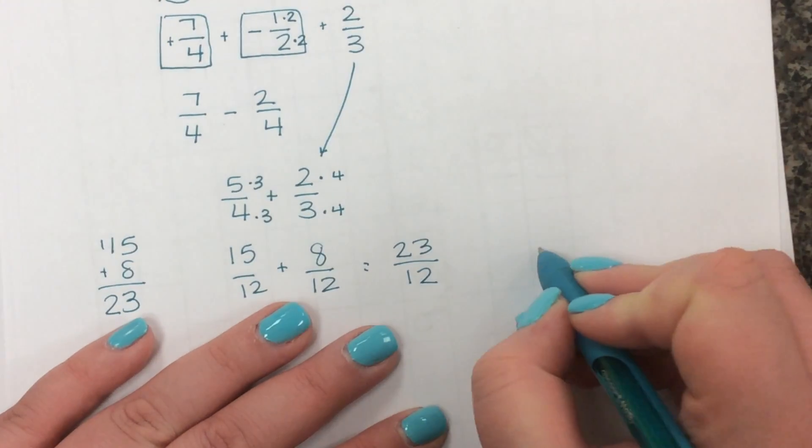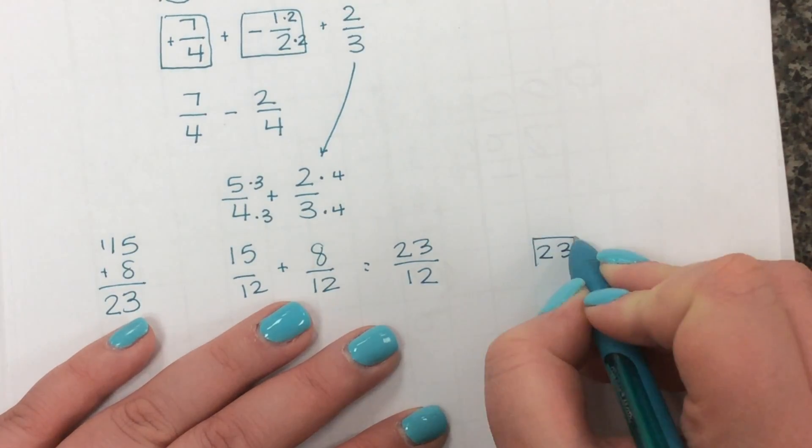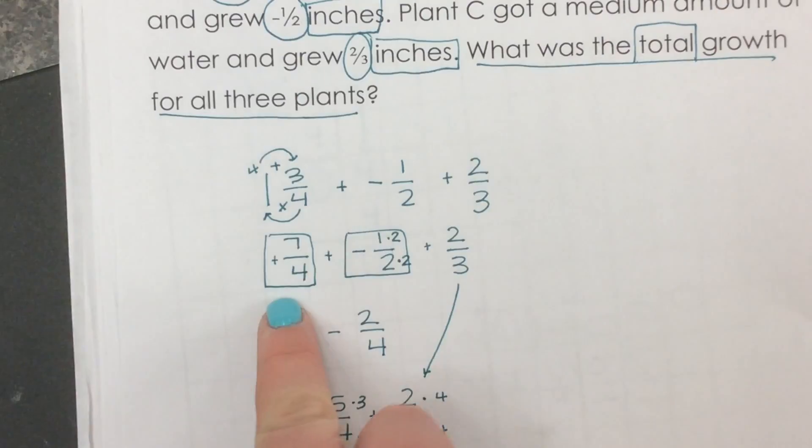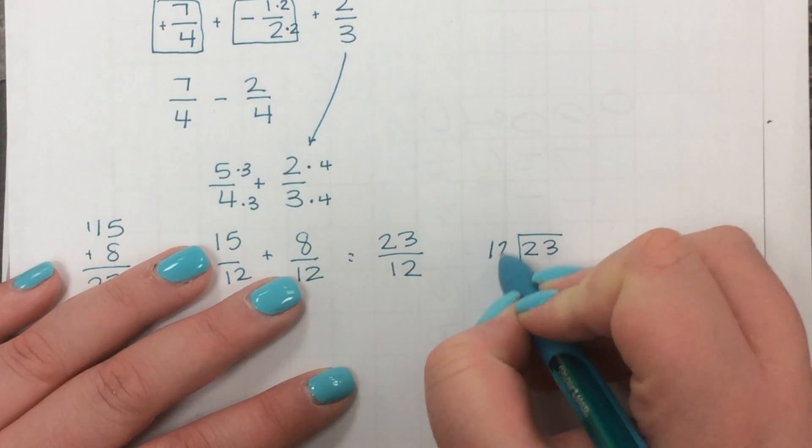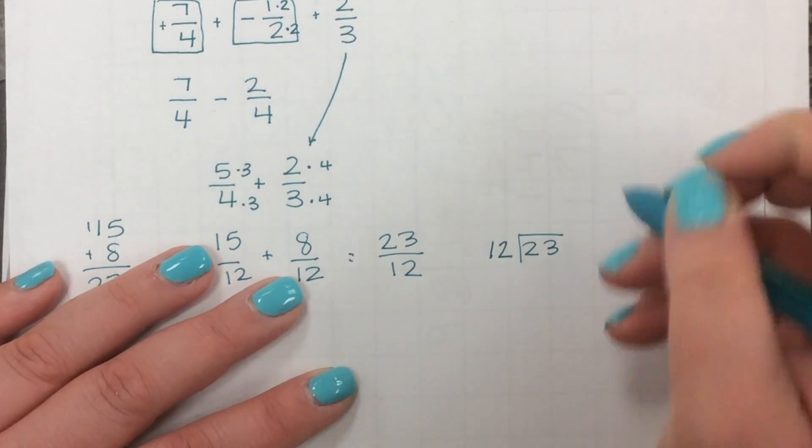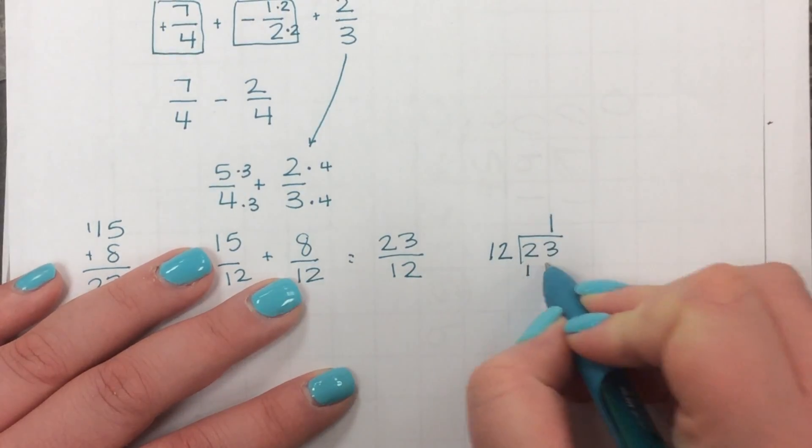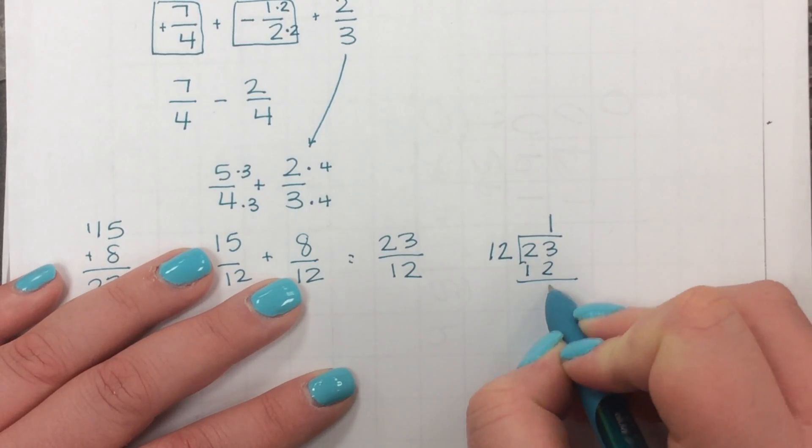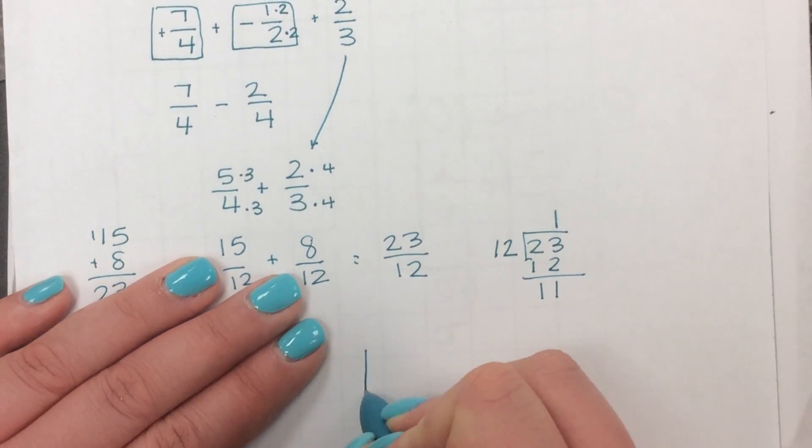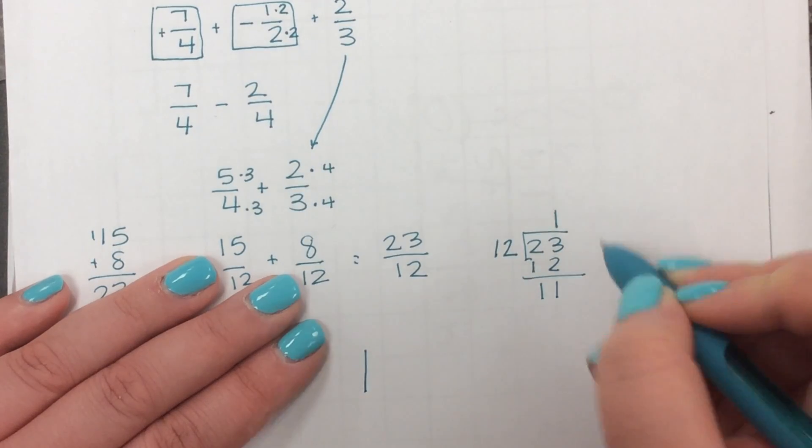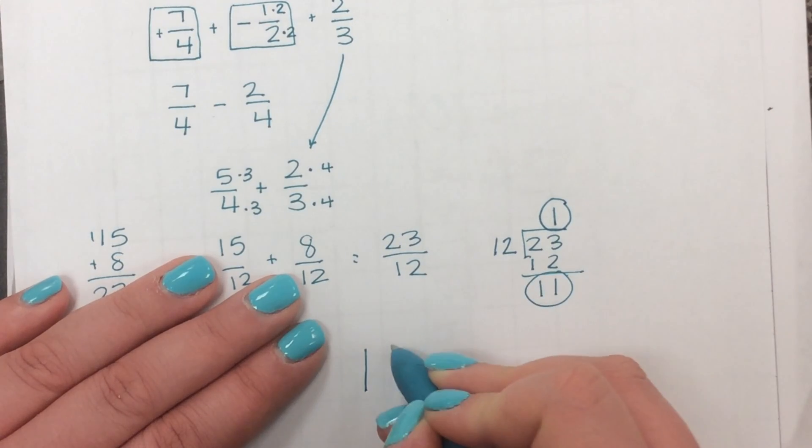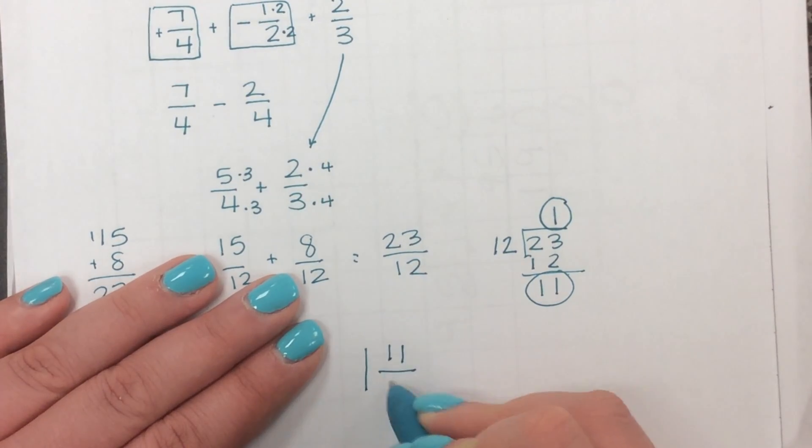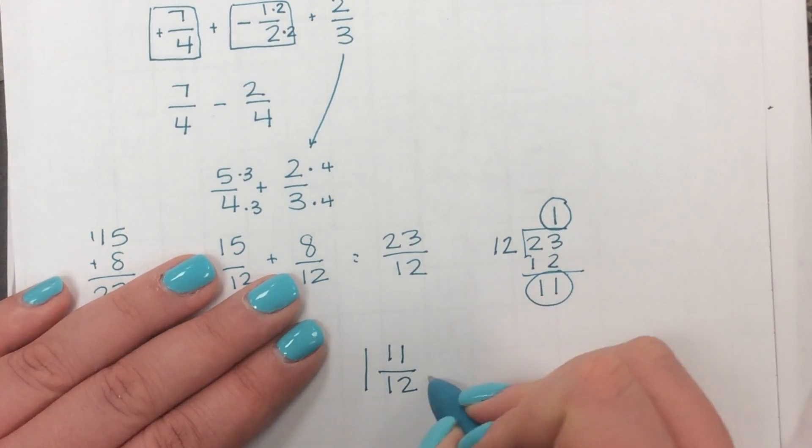And then now I'm going to change that back into a mixed number. I said mixed number earlier. I like improper fractions better. So I'm going to divide this by 12. 12 goes into 23 one time. So the total growth of all three plants, now that's my whole number, this is my numerator, will be 1 and 11 twelfths inches.